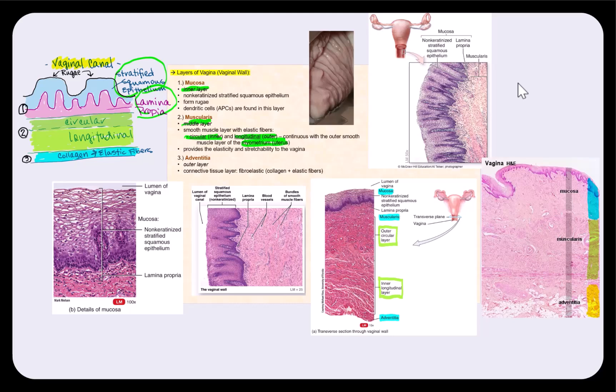Finally, the outermost layer is the adventitia. So this is where we find the connective tissue layer, and it consists of collagen and elastic fiber. So this is said to be a fibroelastic layer.